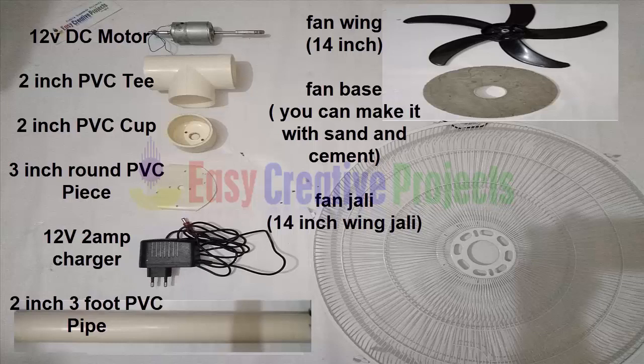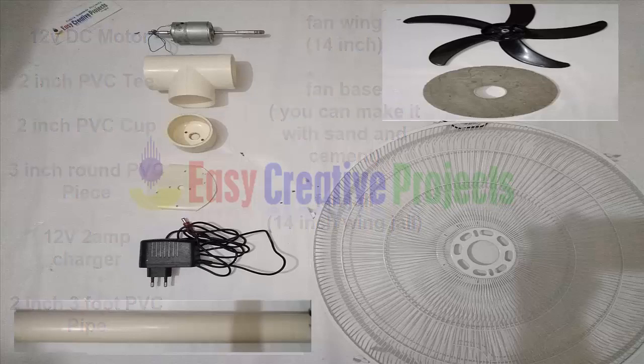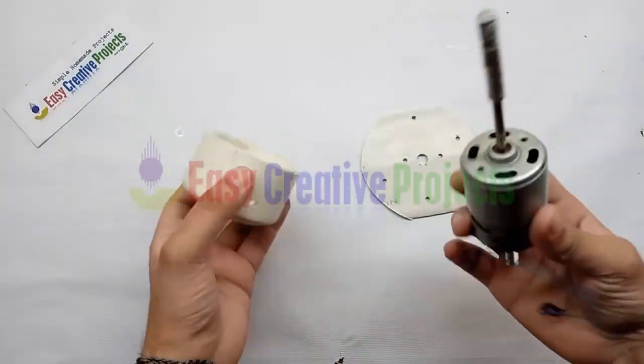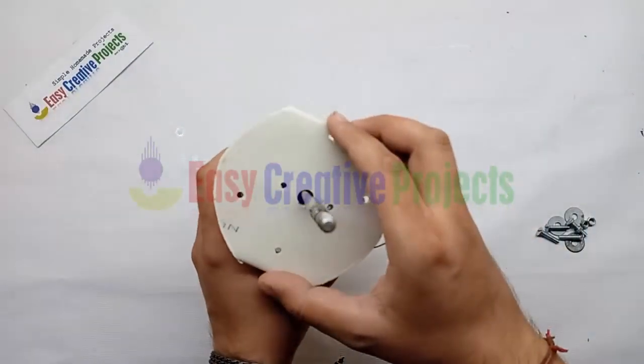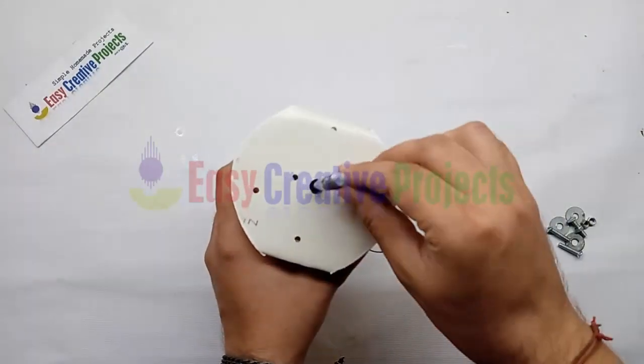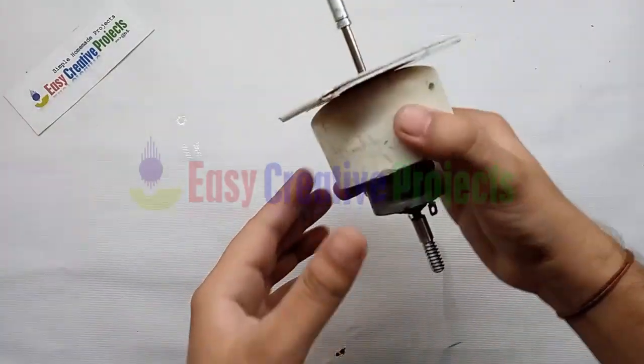12 volt 2 ampere charger, charger connector, 2 inch 3 foot length PVC pipe, fan wing, fan base (you can make it with sand and cement), fan jolly. Now start to make: adjust DC fan motor on PVC cup like this.